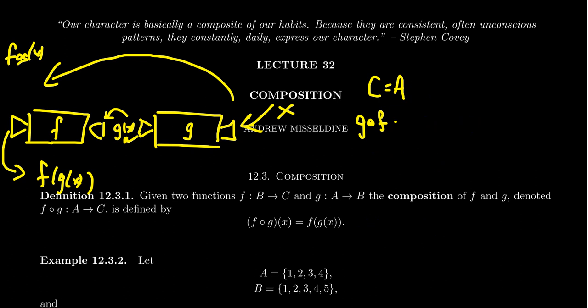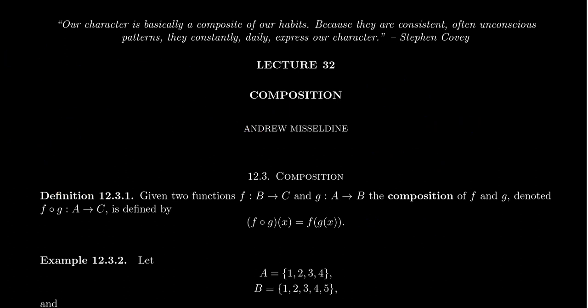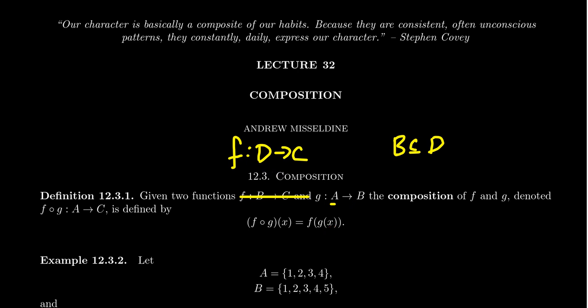Another thing to mention: it doesn't actually have to be the case that B is exactly the same set. We can generalize this a little bit. We can say F is a map from D to C. Composition works so long as B is a subset of D. If you take something in A, map it to B using G, then G(x) lives in B, and since B is a subset of D, it's inside the domain of F, and you can map it over to C. So all that's required for composition is that the codomain of G is a subset of the domain of F.